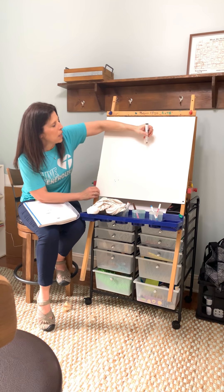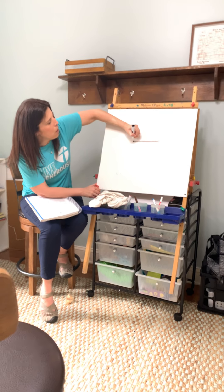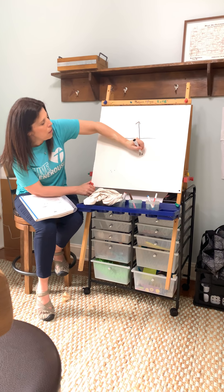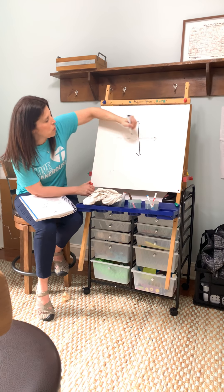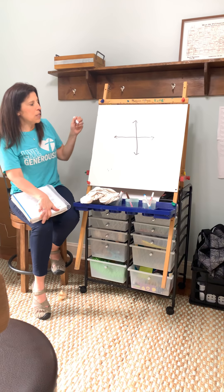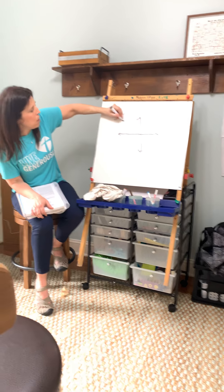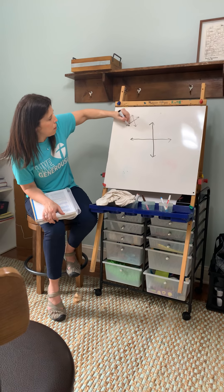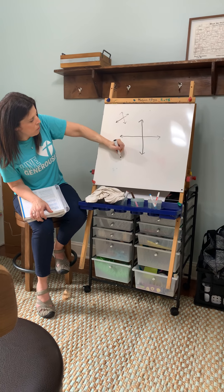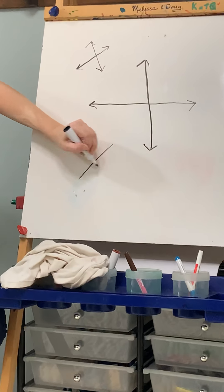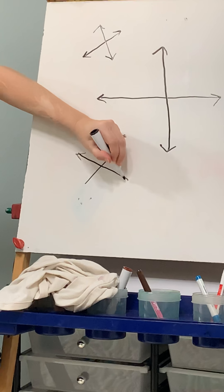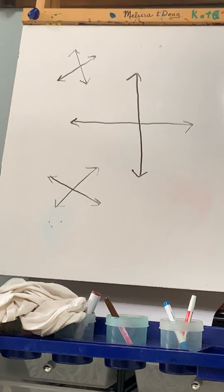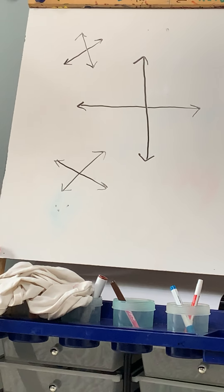An intersecting line is one that would come across and crisscross another line. A line can crisscross at any point — it can make a diagonal. As long as it crisscrosses another line, it can come from any direction. This is an intersecting line.